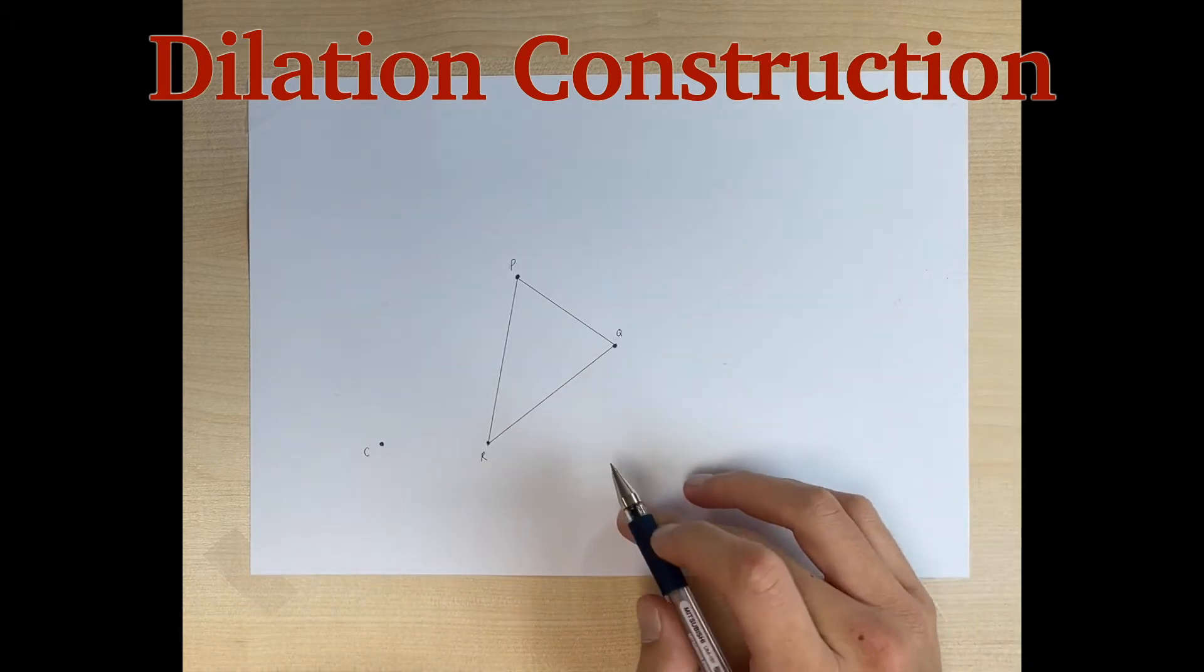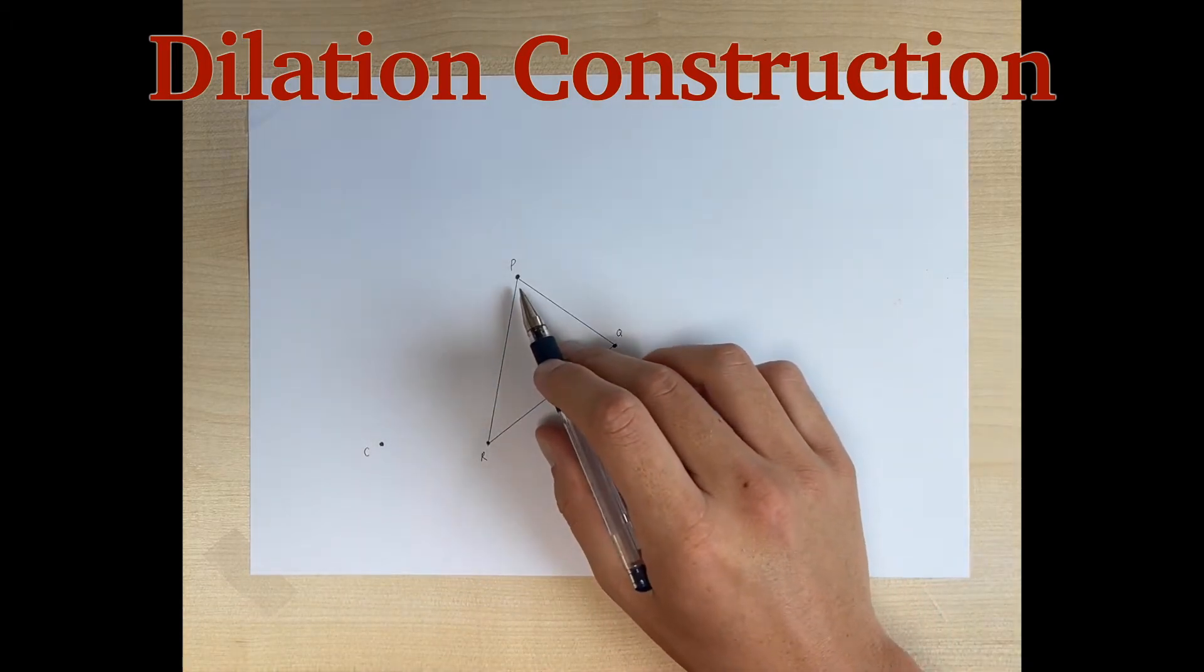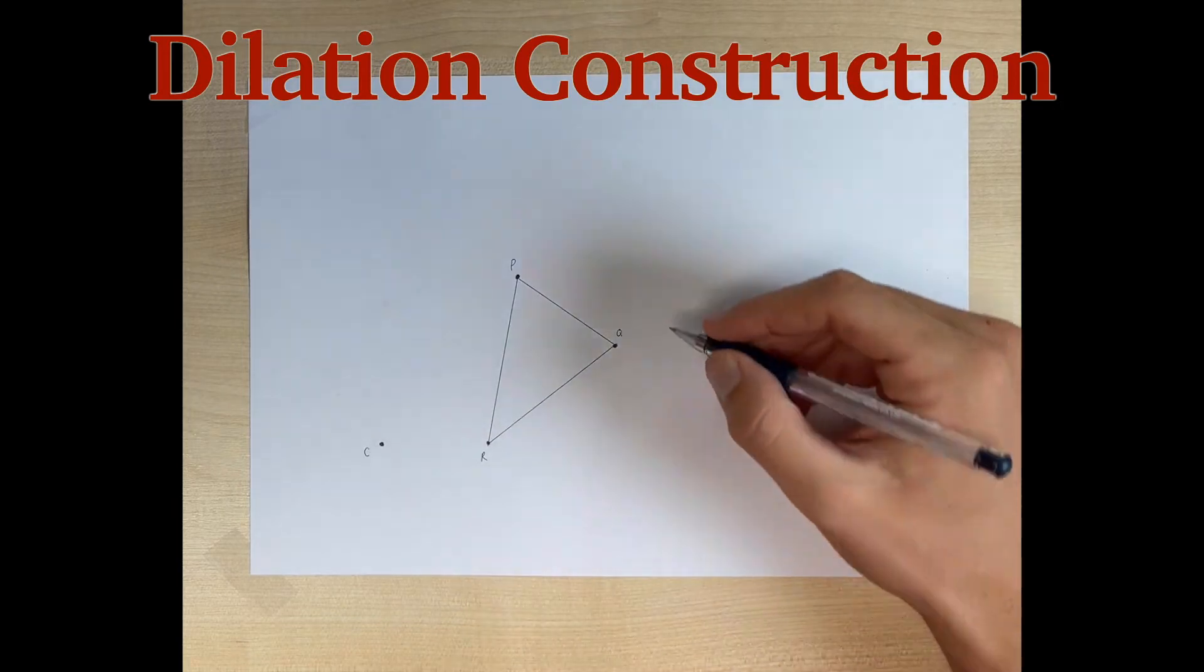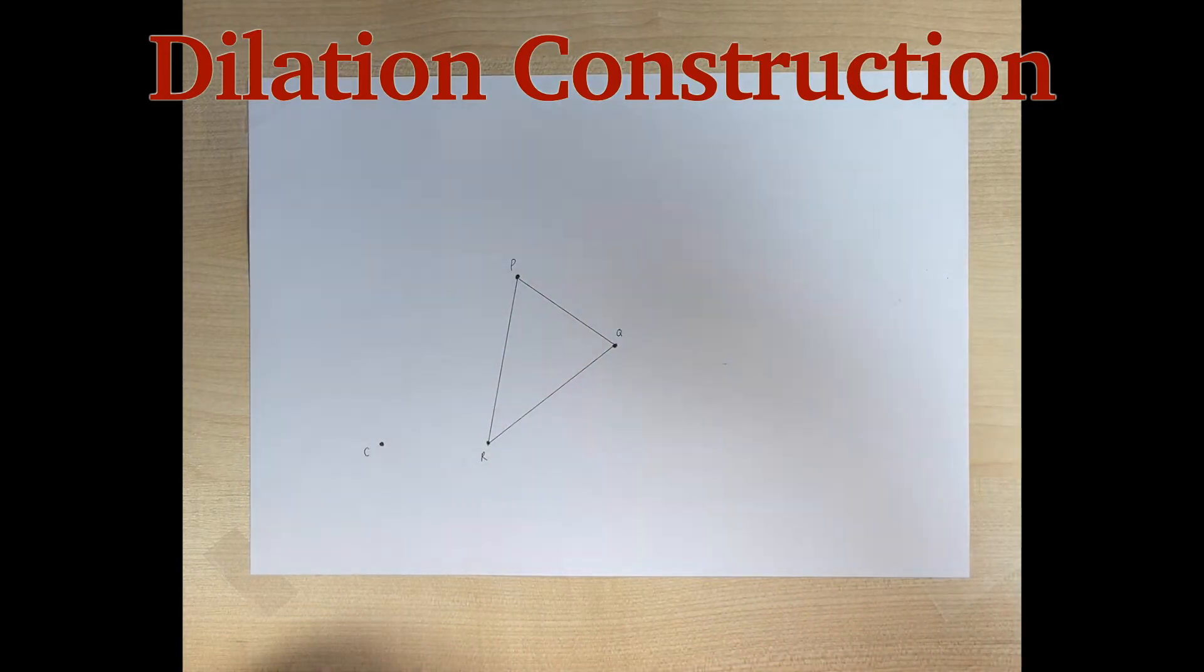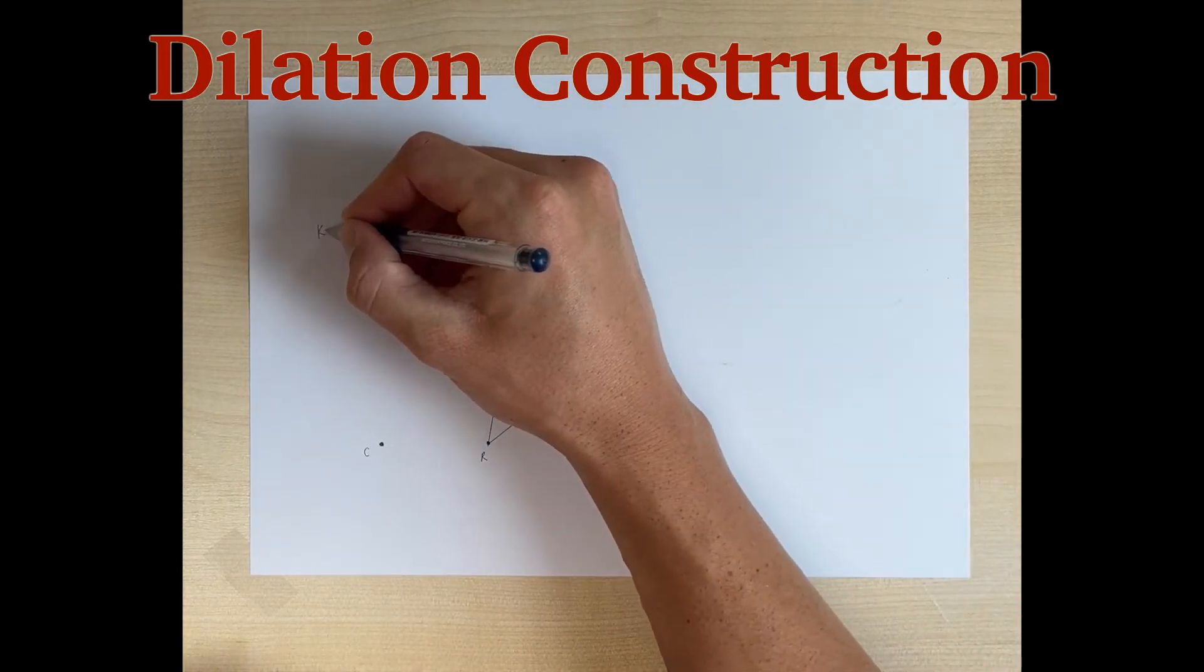So here's our setup. We are going to dilate triangle PQR with a scale factor of 2, so we want K to equal 2.